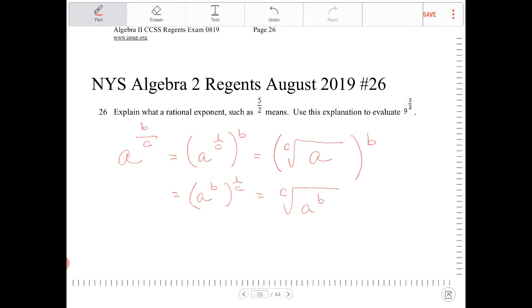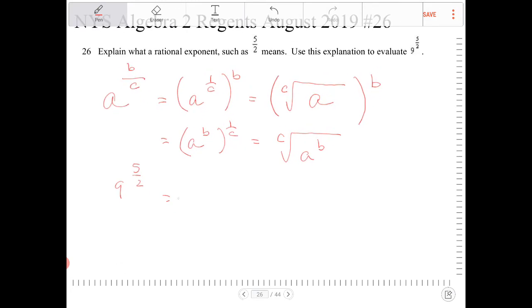So knowing this we can then take 9 to the 5 halves and what that translates to is we have 9 to the 1 half to the 5th which will be equivalent to radical 9 to the 5th which is 3 to the 5th.